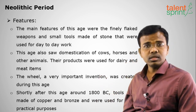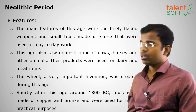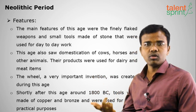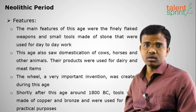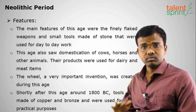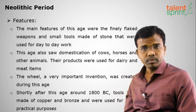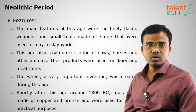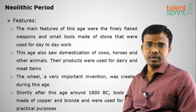To summarize the key features of the Neolithic period: the invention of the wheel was the most significant change, enabling chariots and bullock carts. Domestication of cows and horses for dairy and poultry purposes was another major development. Tools from the Paleolithic and Mesolithic periods were further sharpened and refined. These are the basic differences between the Paleolithic, Mesolithic, and Neolithic periods.